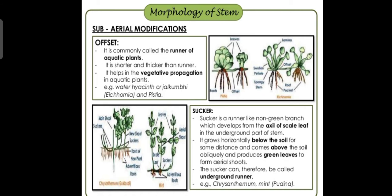The third sub-aerial modification is the offset. It is commonly called the runner of aquatic plants. Runners that grow horizontally with adventitious roots at certain time intervals — when found in aquatic plants, they are called offsets. Aquatic plants grow in water. Offsets are shorter and thicker than runners. They help in vegetative propagation in aquatic plants. Examples are water hyacinth (Eichhornia), Pistia — growing in one line within water, with leaves visible above.